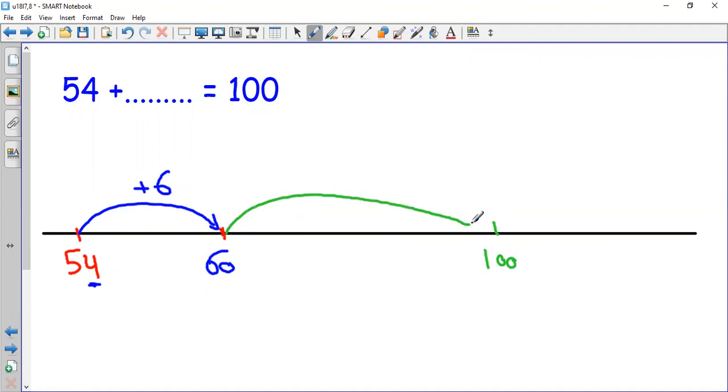And from 60 to 100, so easy. 6 plus 4 equals 10, so 60 plus 40 equals 100. So I need 40. The total number of steps from 54 to 100 is 40 plus 6 equals 46.